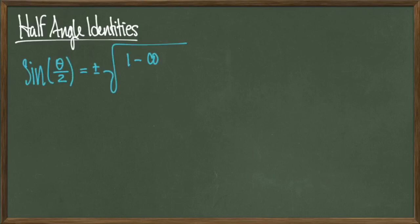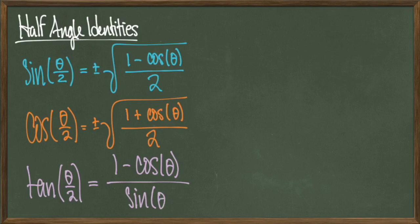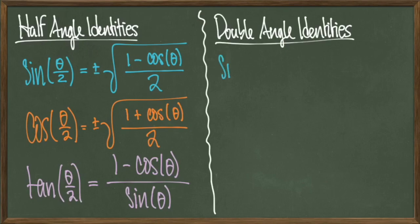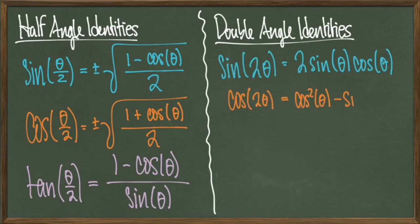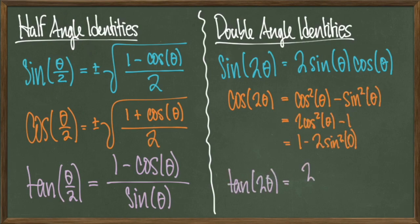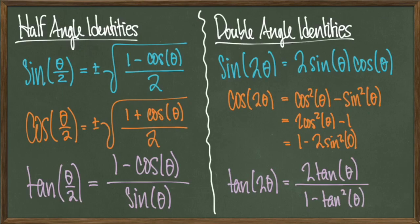We have two more sets of identities. The first are called half-angle identities, used when evaluating sine, cosine, or tangent of an angle divided by 2. Sine and cosine of theta over 2 have very similar formulas, except sine subtracts in the numerator while cosine adds. Tangent of theta over 2 equals 1 minus cosine theta divided by sine theta. The next set are double-angle identities, used when evaluating sine, cosine, or tangent at 2 times an angle theta. Sine of 2 theta equals 2 sine theta times cosine theta. Cosine of 2 theta has three forms: cosine squared theta minus sine squared theta, 2 cosine squared theta minus 1, or 1 minus 2 sine squared theta. Use whichever form best fits the problem.